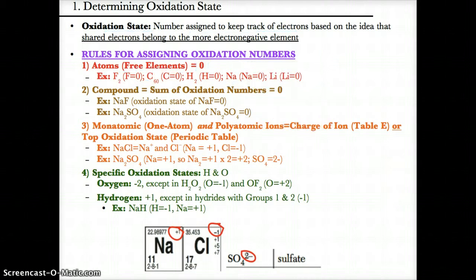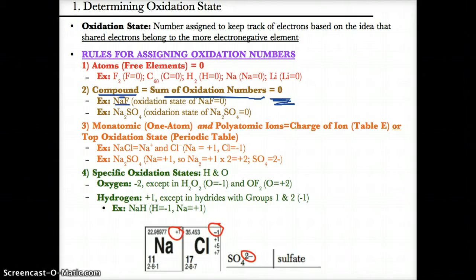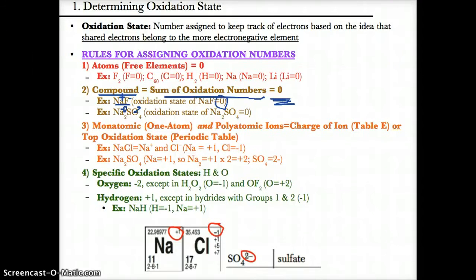The second rule is that compounds have oxidation states of zero, because the sum of the oxidation numbers of elements in the compound always cancel out to zero. For example, in NaF, Na has a charge of +1 and F has a charge of -1, so they cancel out for an oxidation state of zero overall. In Na2SO4, two Na's contribute +2 total, while SO4 has a charge of -2 from table E, and these cancel each other out to give zero.